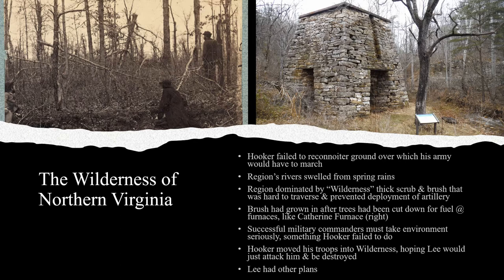Much of the land the Army of the Potomac would have to cross was called the Wilderness. The Wilderness had once been a longleaf pine forest, but the old growth had been cut down in the 1700s as colonial Virginians needed fuel to fire their pig iron furnaces. In place of the trees, the ground was choked with brush, thick bushes, and thorny brambles — an unpleasant place to fight a battle, and the thickness of the brush made it more difficult for Hooker to deploy his artillery. Hooker, against the wishes of his subordinates, ordered his army to deploy in the Wilderness, where he hoped Lee's smaller force would attack him and be destroyed.